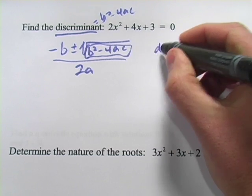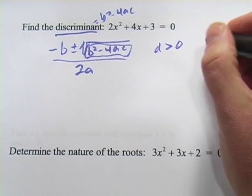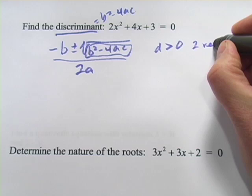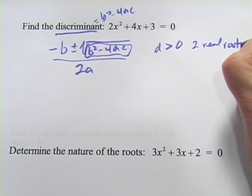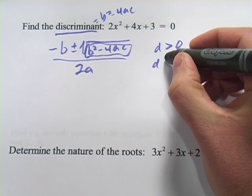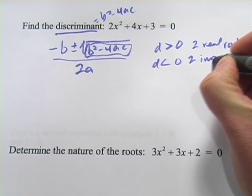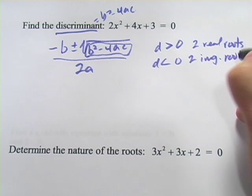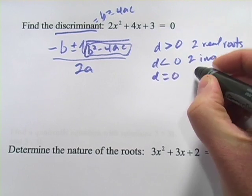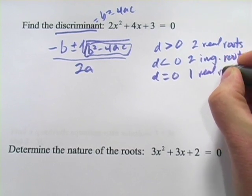When the discriminant is greater than zero, you have two real roots. When the discriminant is less than zero, two imaginary roots. And when the discriminant equals zero, one real root.